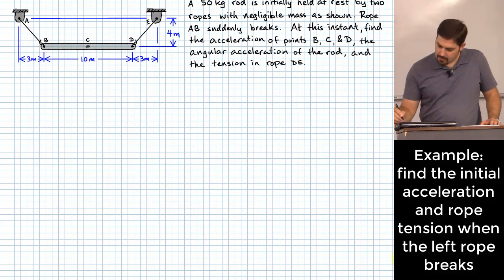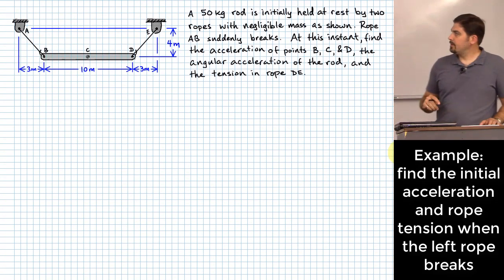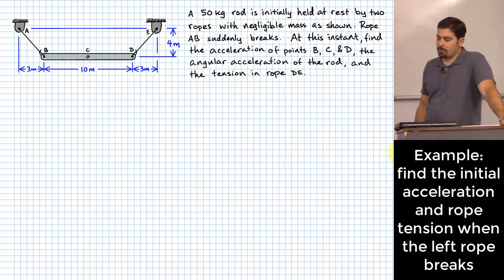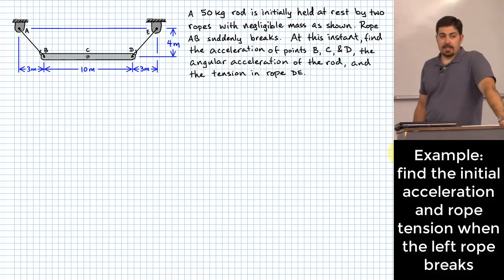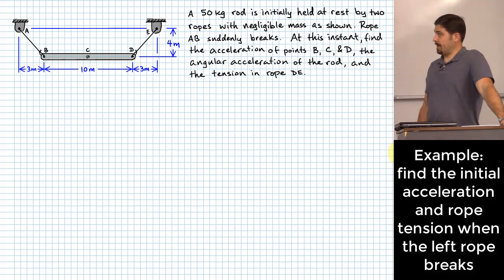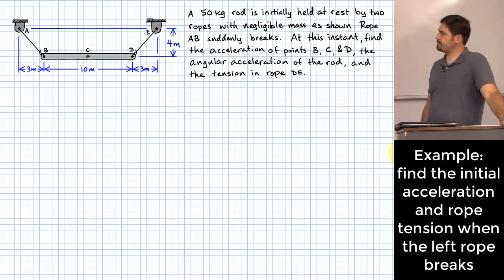Here's the first problem. We have a 50-kilogram rod initially held by two ropes: one from A to B and one from D to E. We'll neglect the mass of the ropes. When rope AB suddenly breaks, right at that point in time the rod will begin to accelerate both angularly and linearly. We want to find the linear acceleration of key points, the angular acceleration of the rod, and the tension in rope DE.